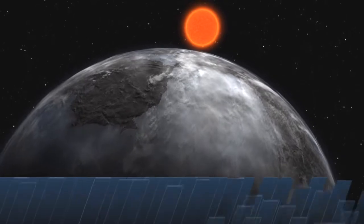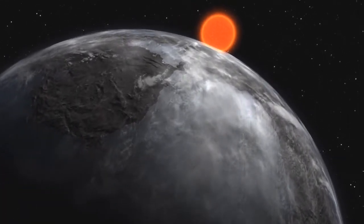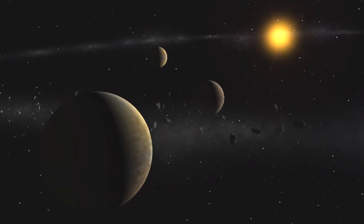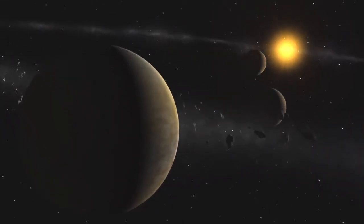Astronomers now know that there are plenty of planets around other stars. But many mysteries remain about how planets, comets and asteroids are formed.